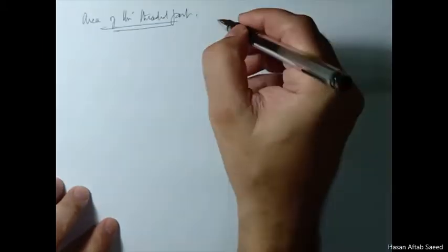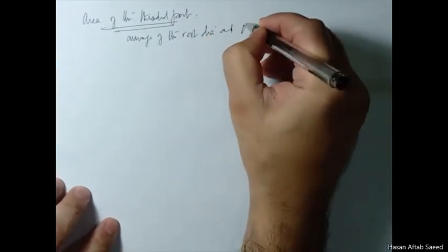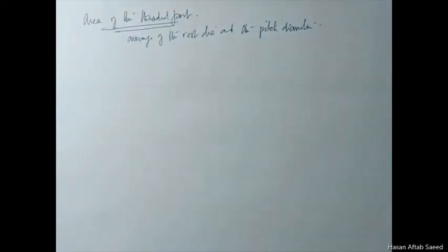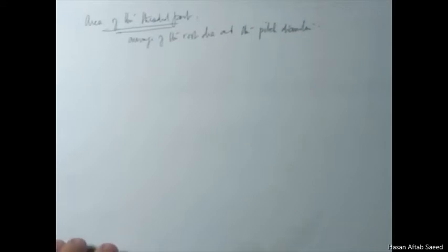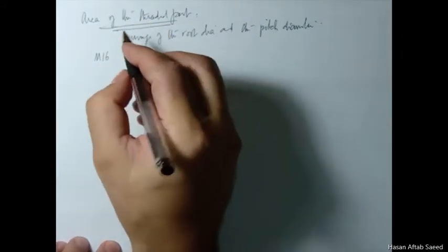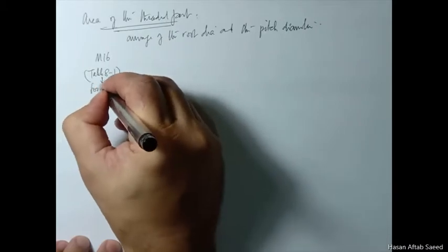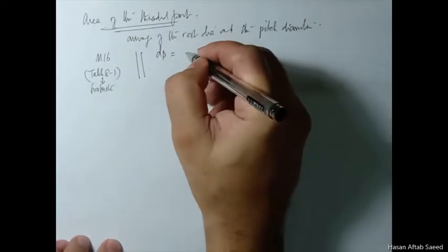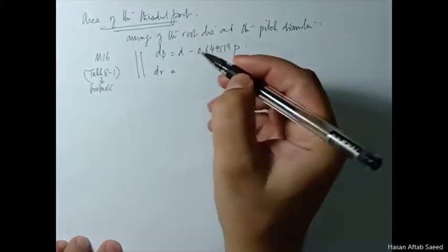For the threaded portion, the approach is more interesting. The consensus is that we take the average of the root diameter and the pitch diameter. We don't take the biggest diameter because that would be wrong; we take an average of the root diameter d_r and the pitch diameter d_p. For M16, the footnote under Table 8.1 gives the formulas: d_p = D − 0.649519P and d_r = D − 1.226869P.